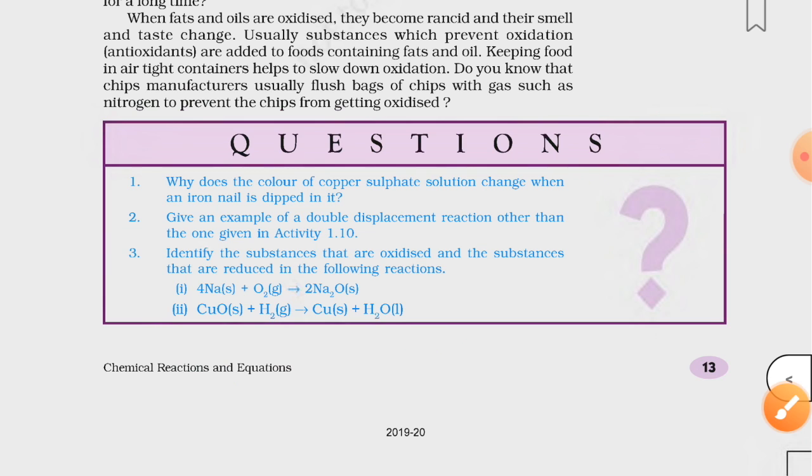Now in third one, you have to identify the oxidized and reduced substances from the following. You must remember I told you that whenever you have to select oxidized or reduced substance, then you will do it from the reactant side. Look carefully. In the first reaction, sodium is reacting with oxygen to form sodium oxide, so the substance which is undergoing oxidation is sodium.